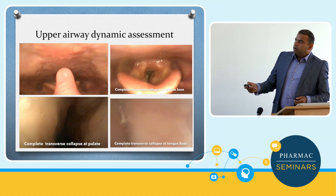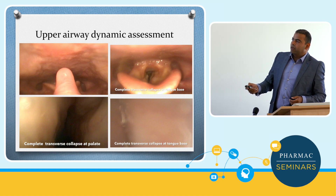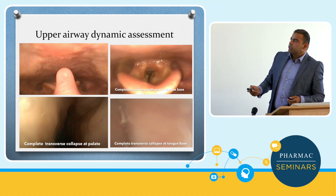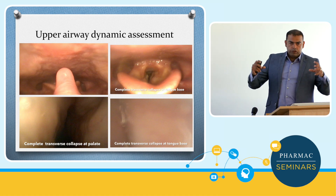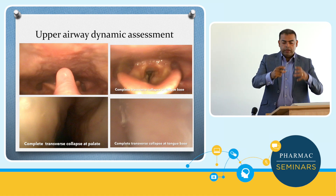Looking with the endoscope, you're looking behind through the nose, then looking down towards the uvula hanging in midair. The palate is just there. You're looking at the epiglottis, posterior wall and lateral walls. With the Modified Müller Maneuver, both tonsils just collapse completely and close the airway completely.